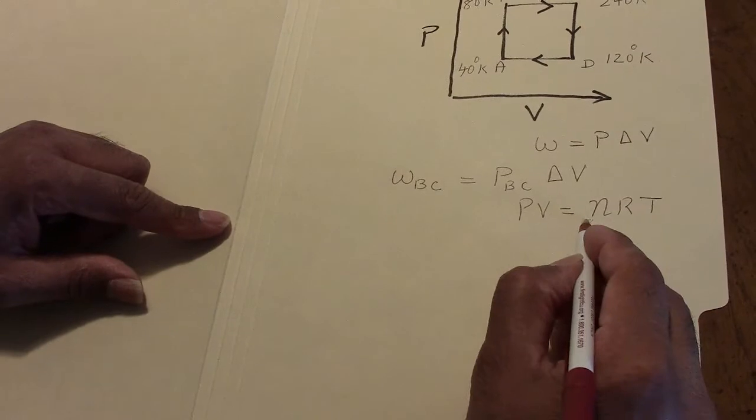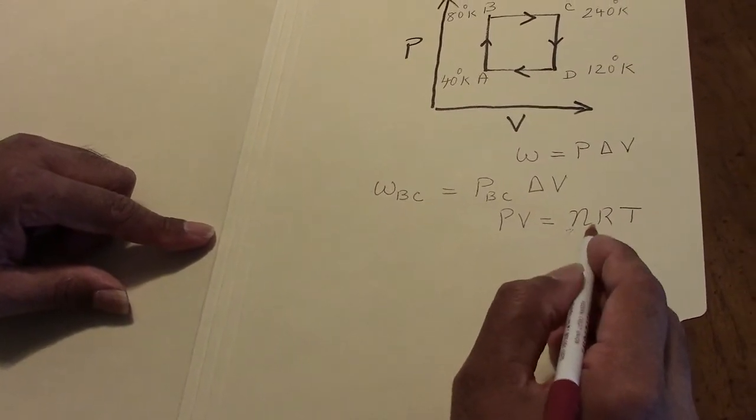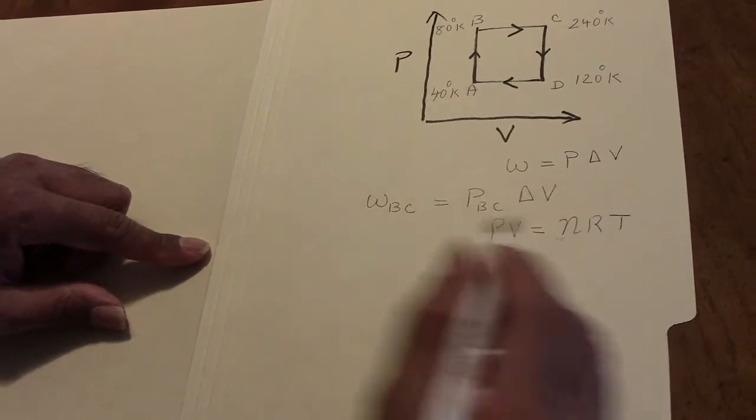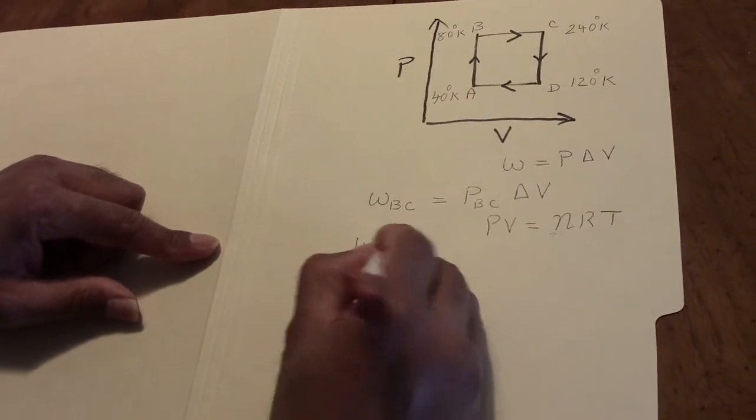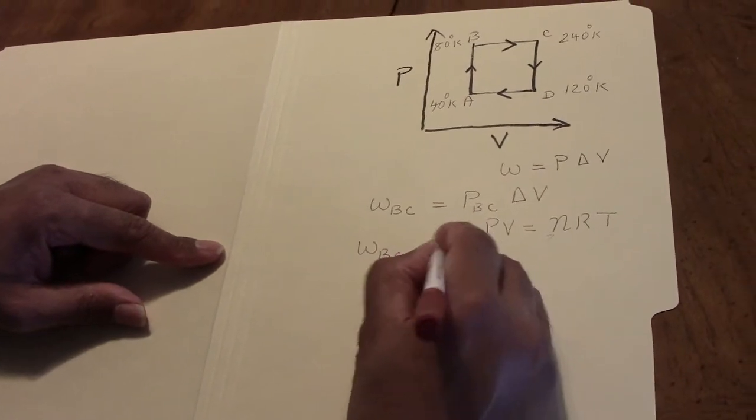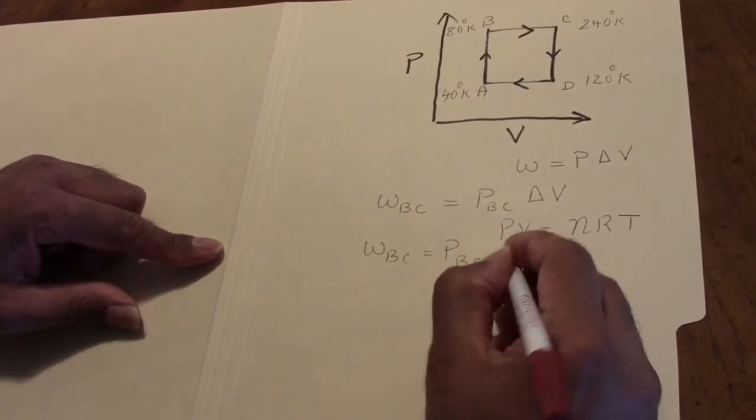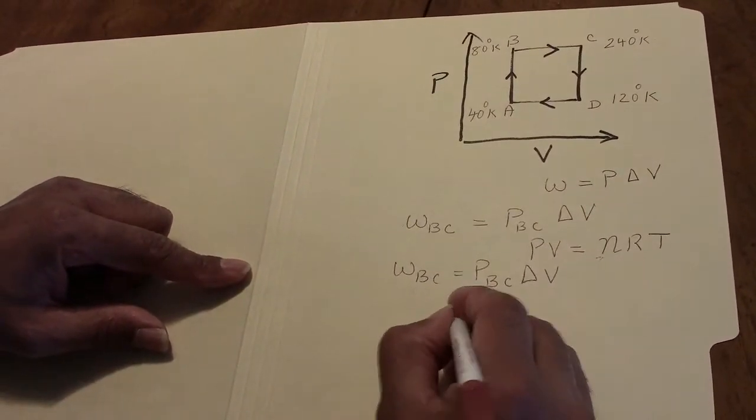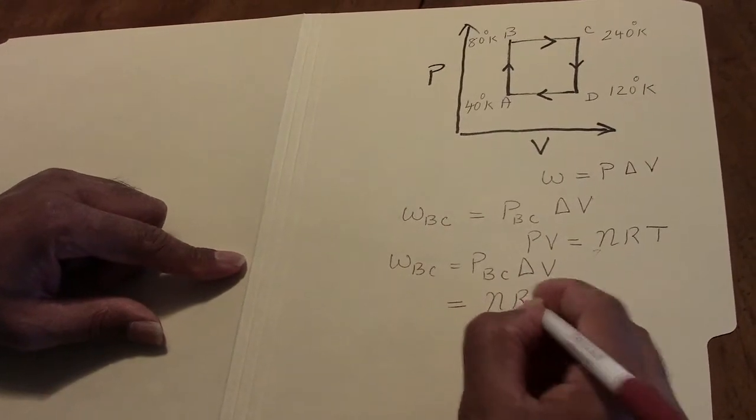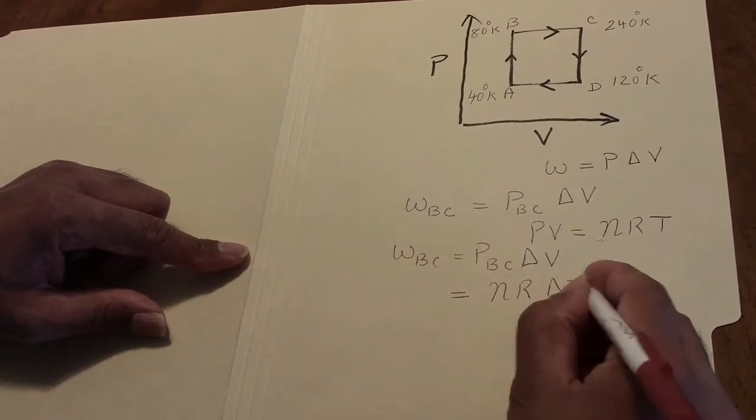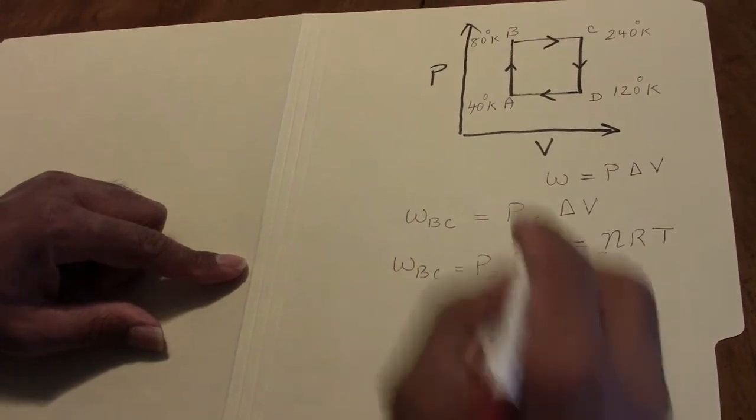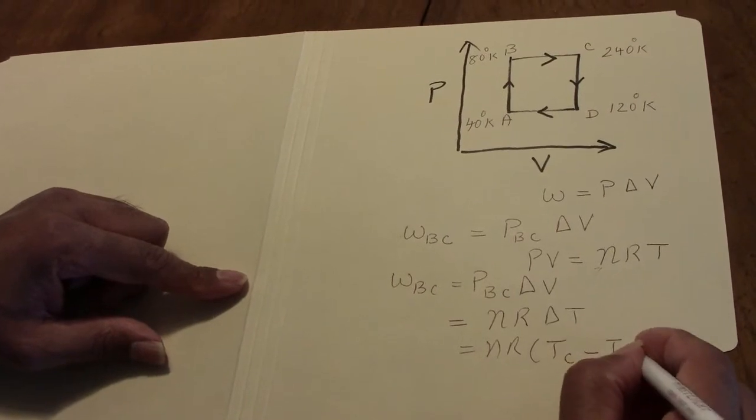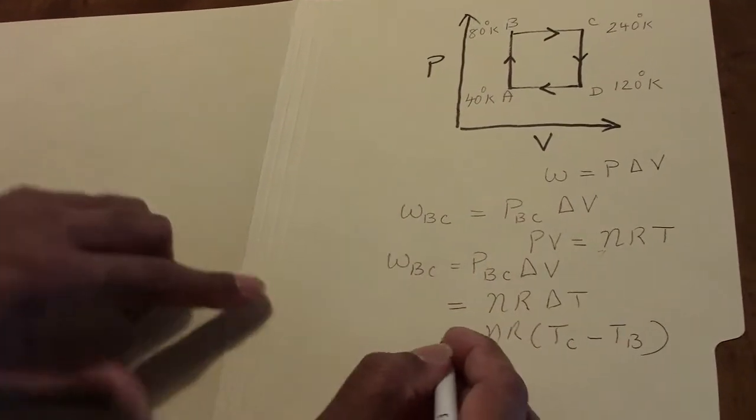where N is the number of moles of the gas, R is the gas constant, and T is the temperature in degrees Kelvin. So we could write WBC is the pressure along BC times delta V and this can be written as NR delta T or NR(TC minus TB). Similarly,